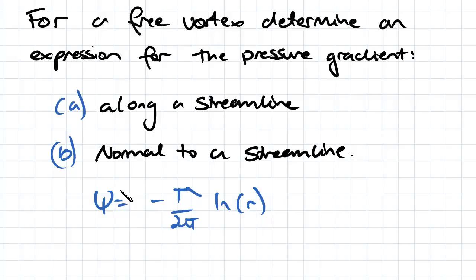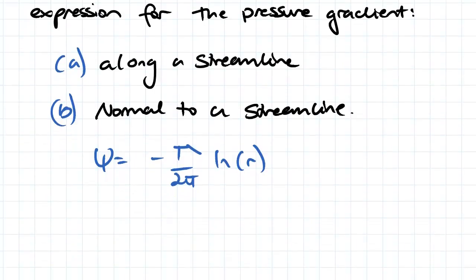We also know from our polar coordinate system the values for our radial velocity and our tangential velocity. Our radial velocity is equal to 1 over r, the partial derivative of our stream function in terms of theta, which is equal to 0 for a vortex because we don't have any radial velocity.